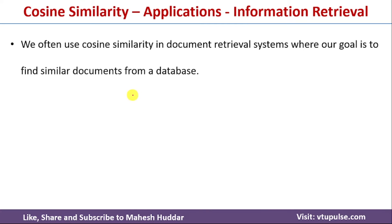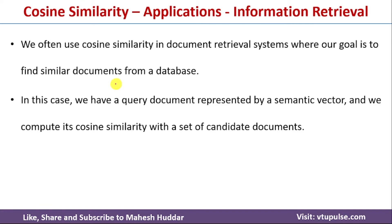In information retrieval, whenever we want to find a similar document to a query document, we find the cosine similarity between the query document and the existing documents. Based on the similarity value, we retrieve the most similar document with respect to the query document.